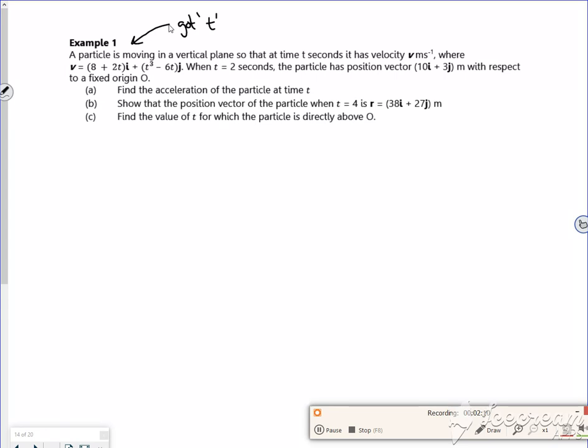So that's given us a big hint. If it's got t in it, then we want to do some calculus. So we're going to find the acceleration. So we know that the acceleration is d by dt of v. Right now then, all I'm going to do, if I know that my velocity is 8 plus 2t and t cubed minus 6t, I'm just going to differentiate each line.